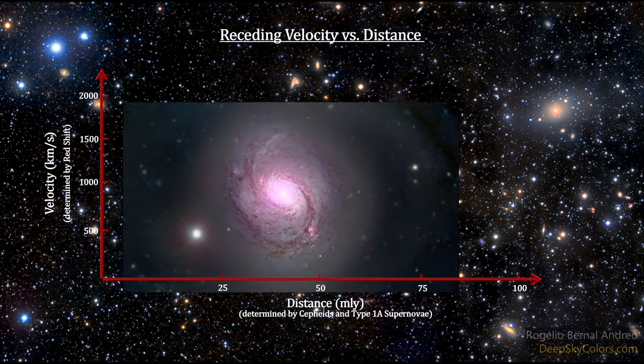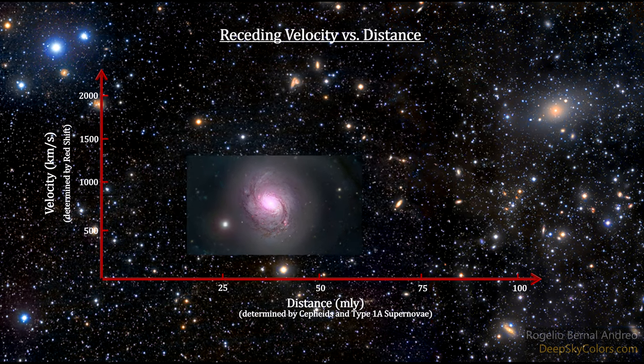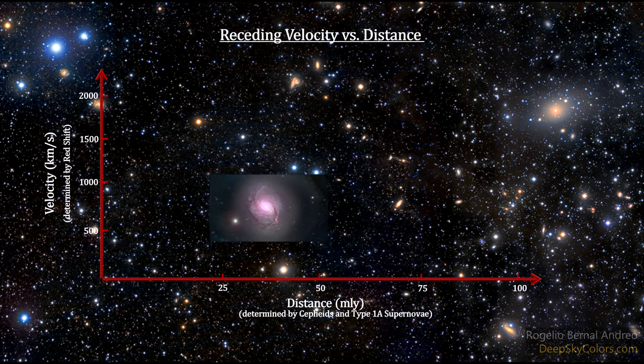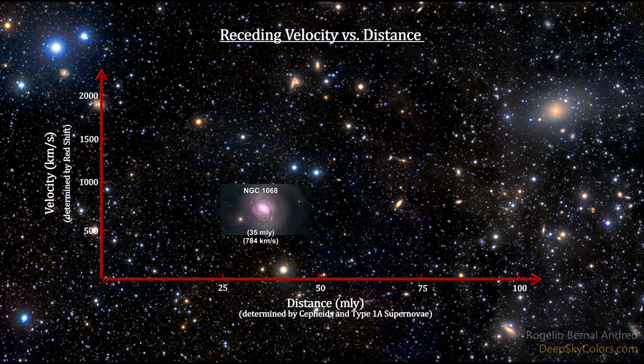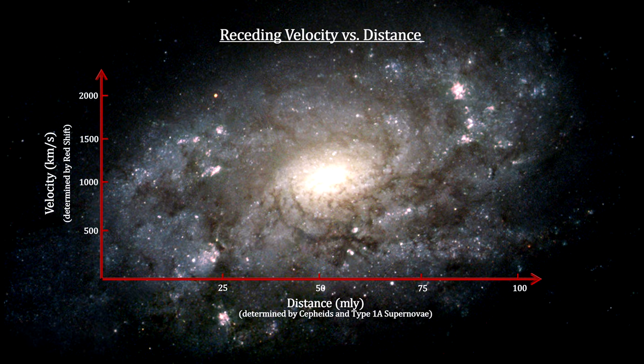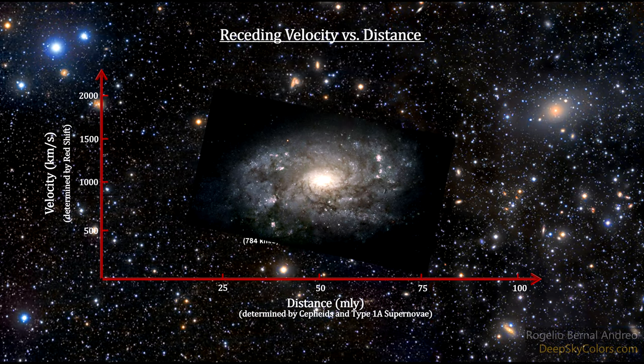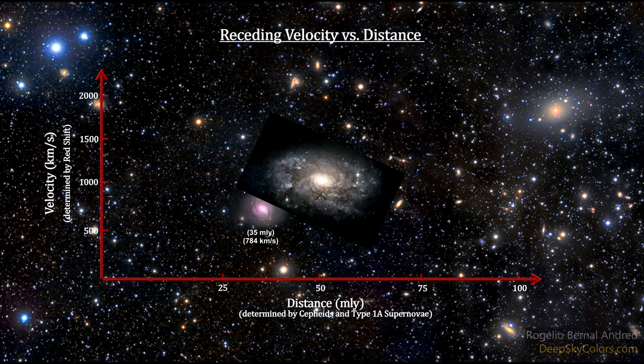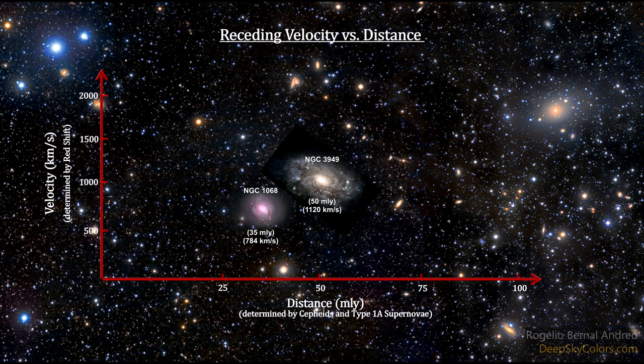NGC 1068 is 35 million light years away and receding at 784 kilometers per second. NGC 3949 is 50 million light years away and receding at 1,120 kilometers per second.